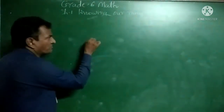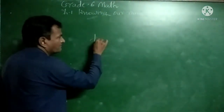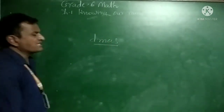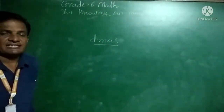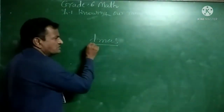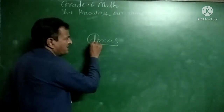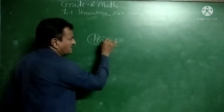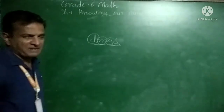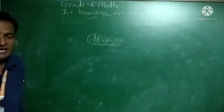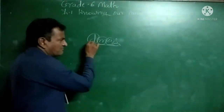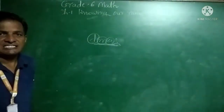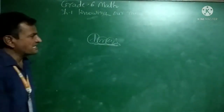Suppose all of you know about DMAS. When more than two operations are done, we use DMAS. DMAS means Division, Multiplication, Addition, and Subtraction. In our previous class we were learning mostly DMAS — Division, Multiplication, Addition, and Subtraction.